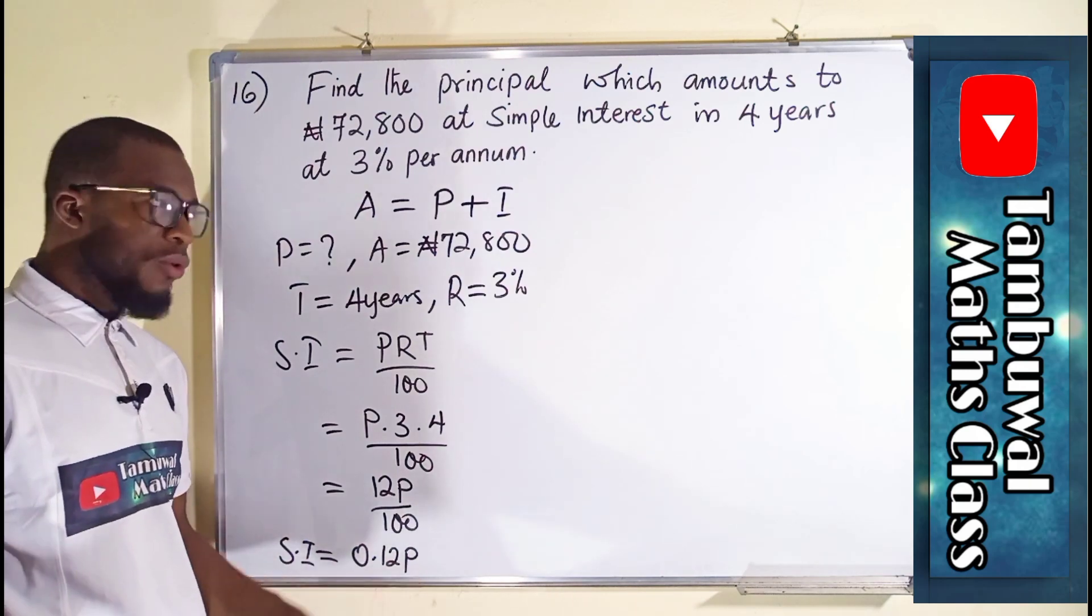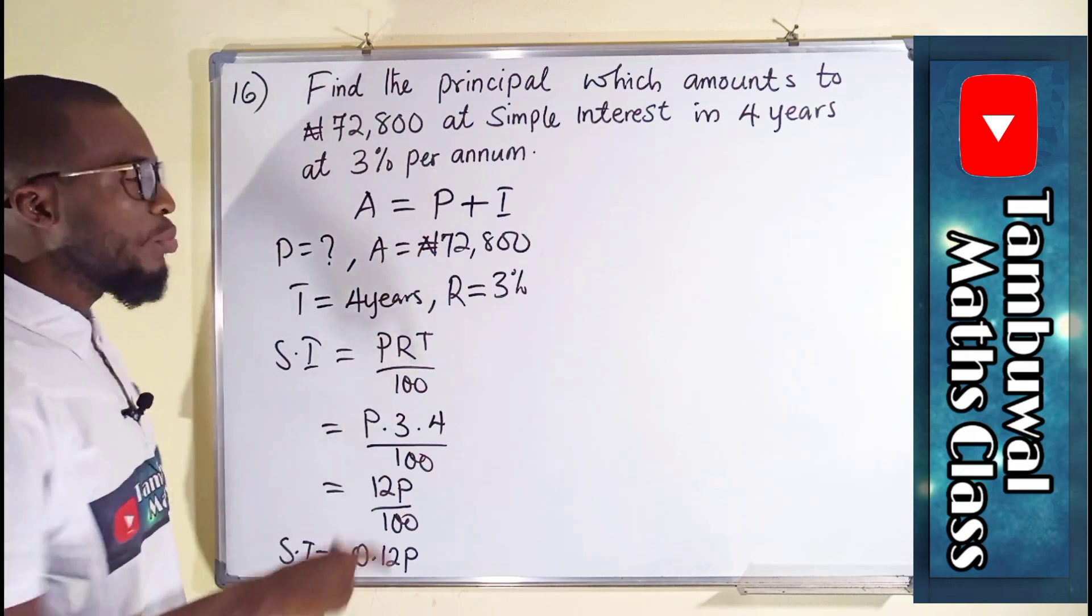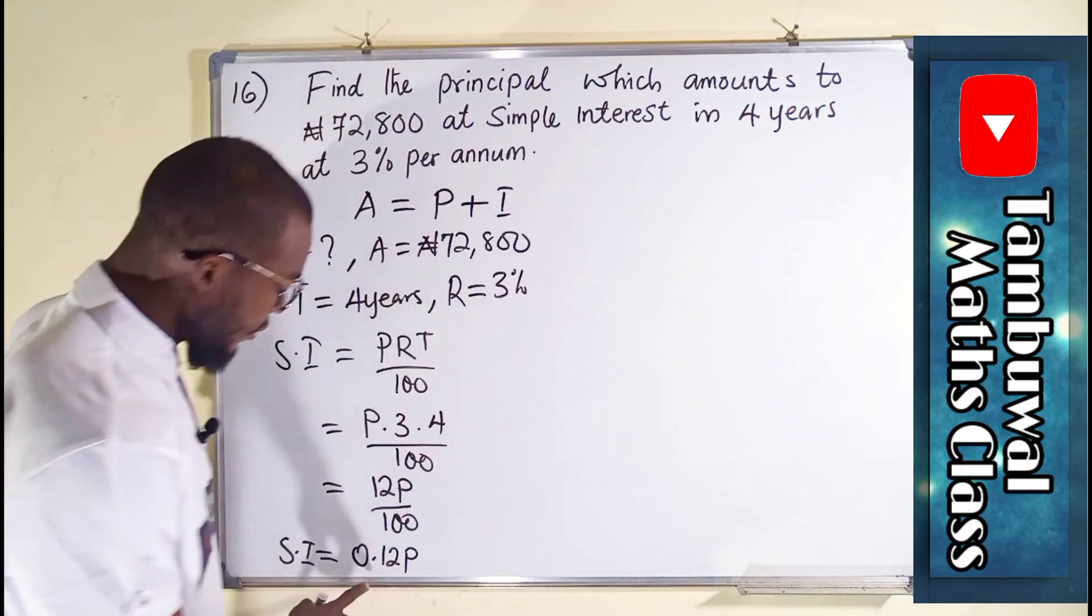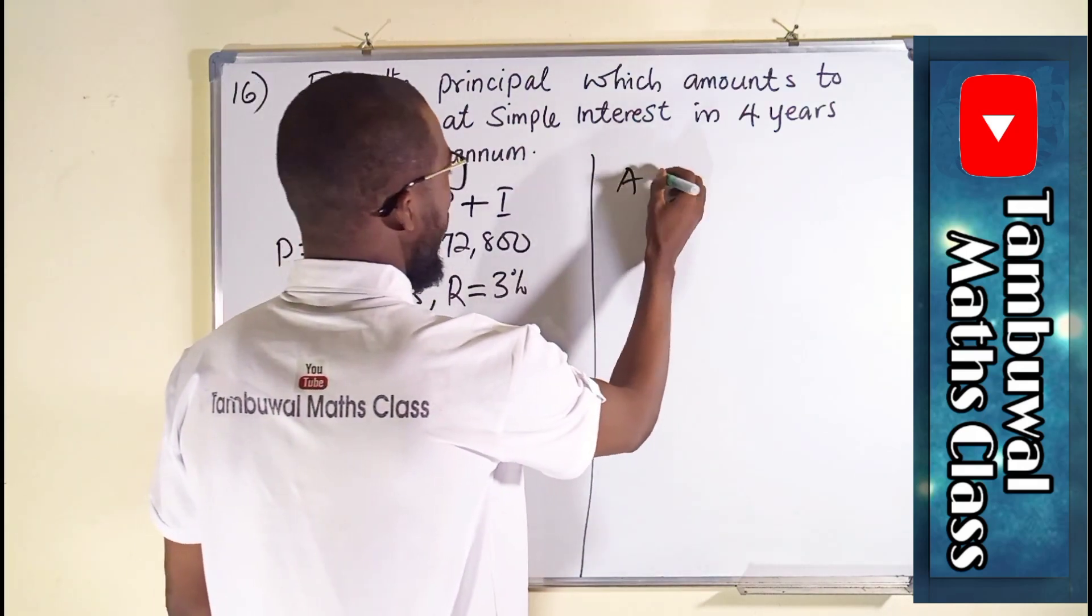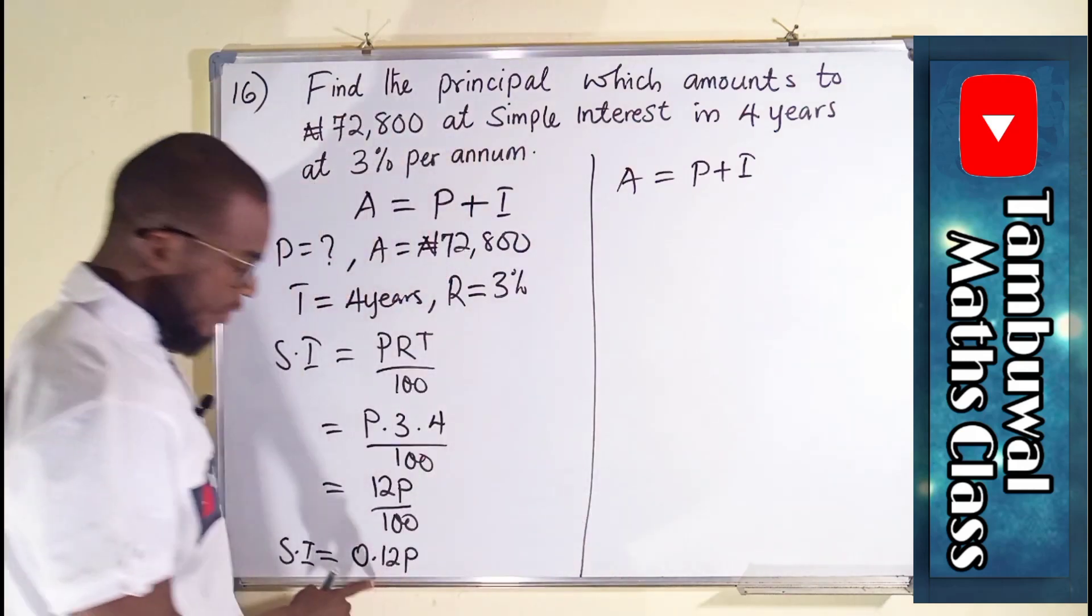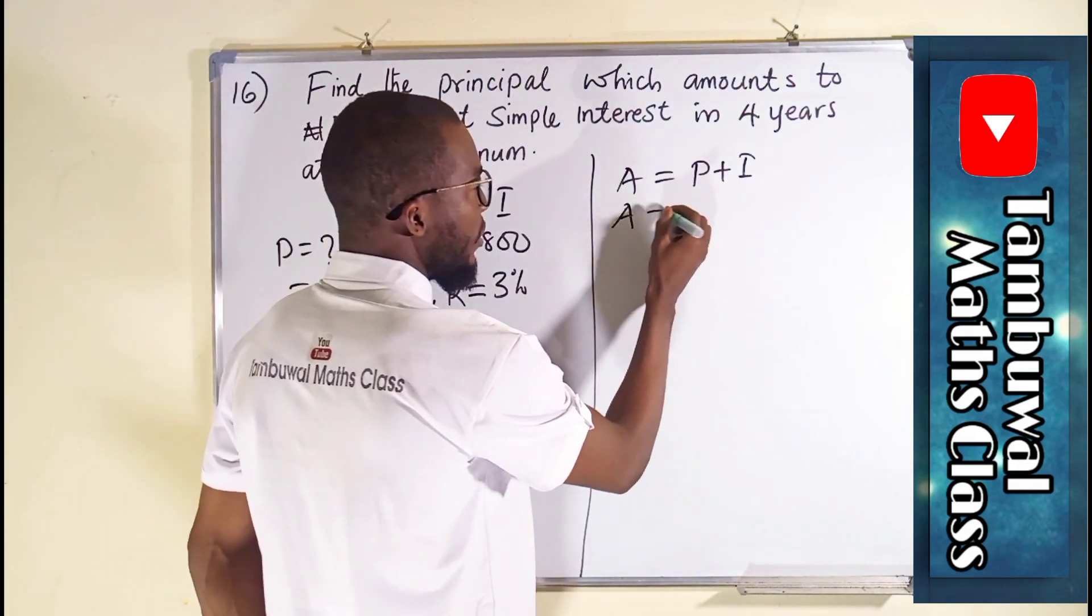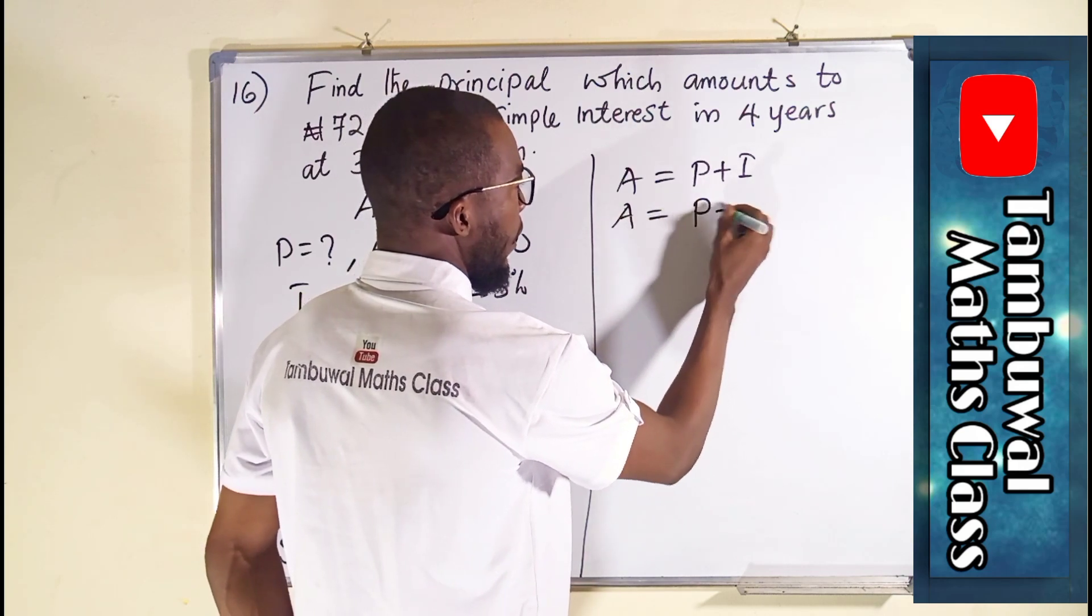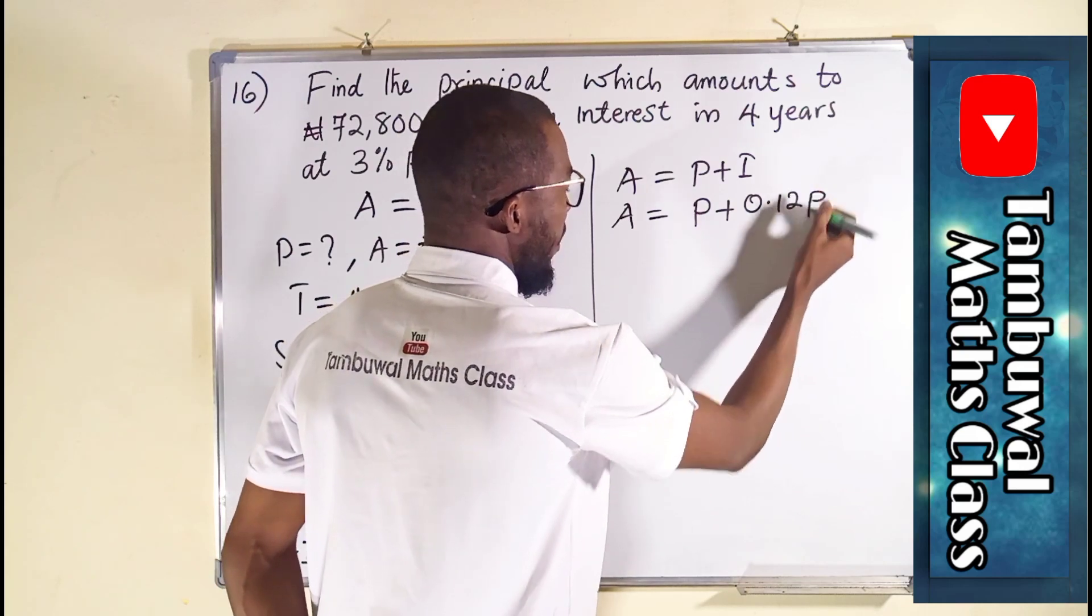But P is still unknown. So from this equation, A equal to P plus I, we can substitute this information there. So A equals P plus I, but I is 0.12P. And hence, A will now be equal to P plus 0.12P.